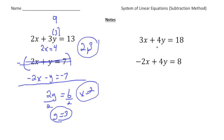Let's try the next one. We have 3x plus 4y equals 18, and negative 2x plus 4y equals 8. Again, look at the coefficients — we have 4y and 4y. Anytime you see that, it's a really good sign you should use the subtraction method. So again, I'm going to subtract the second equation.